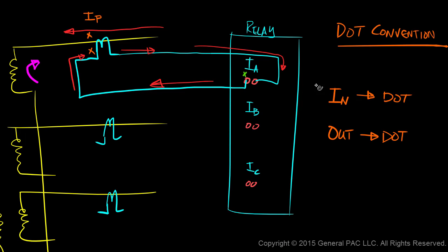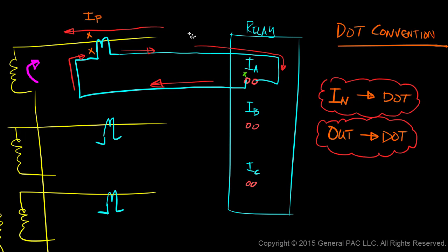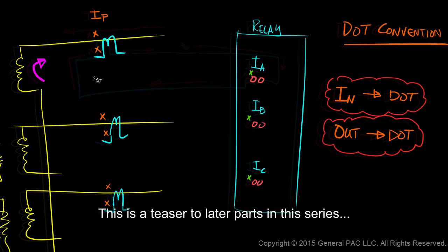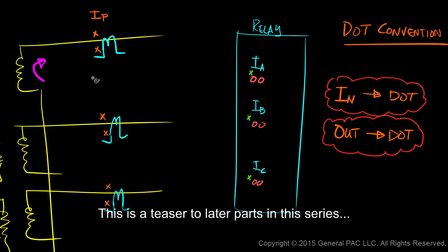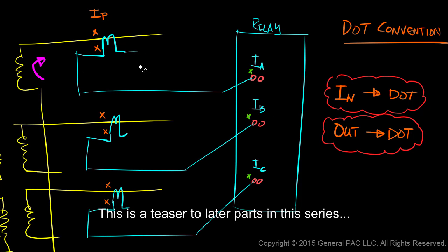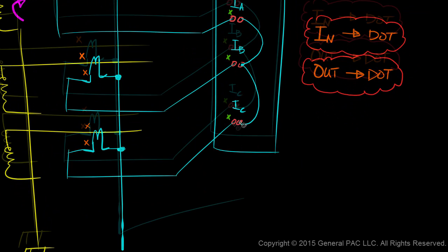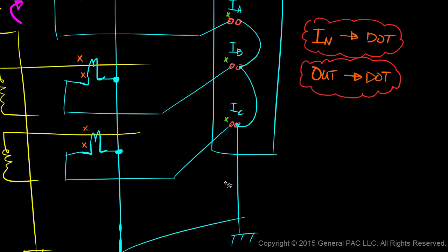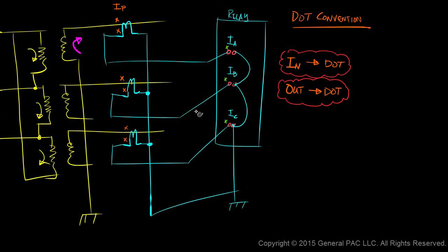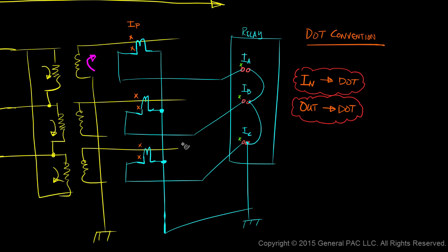In terms of the dot convention, there are really two rules we need to memorize: what goes into the dot must flow out of the dot. As a teaser to other parts of this series, here is a very typical arrangement of three current transformers connected in Y. We'll talk about this particular type of arrangement in a later module.